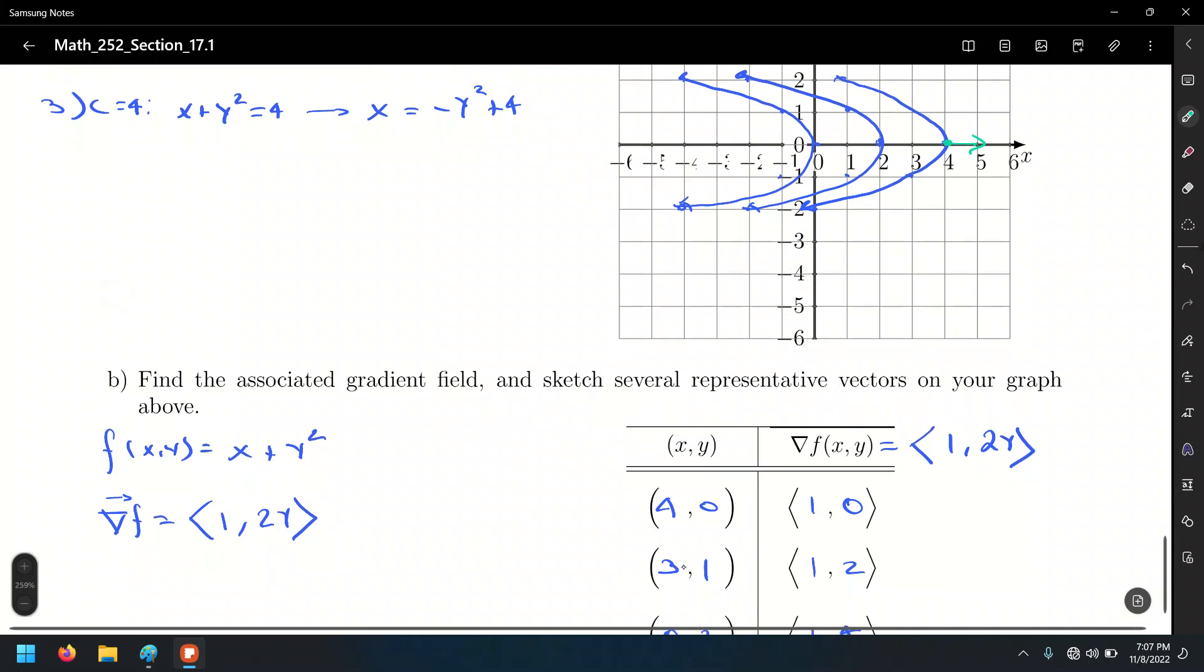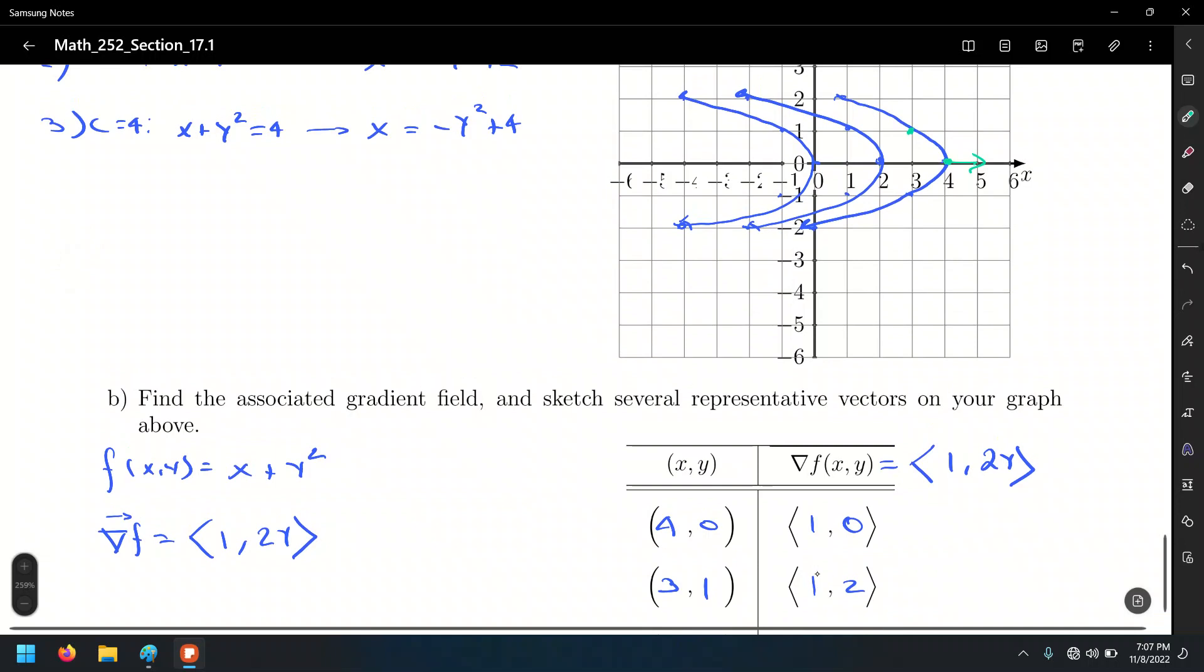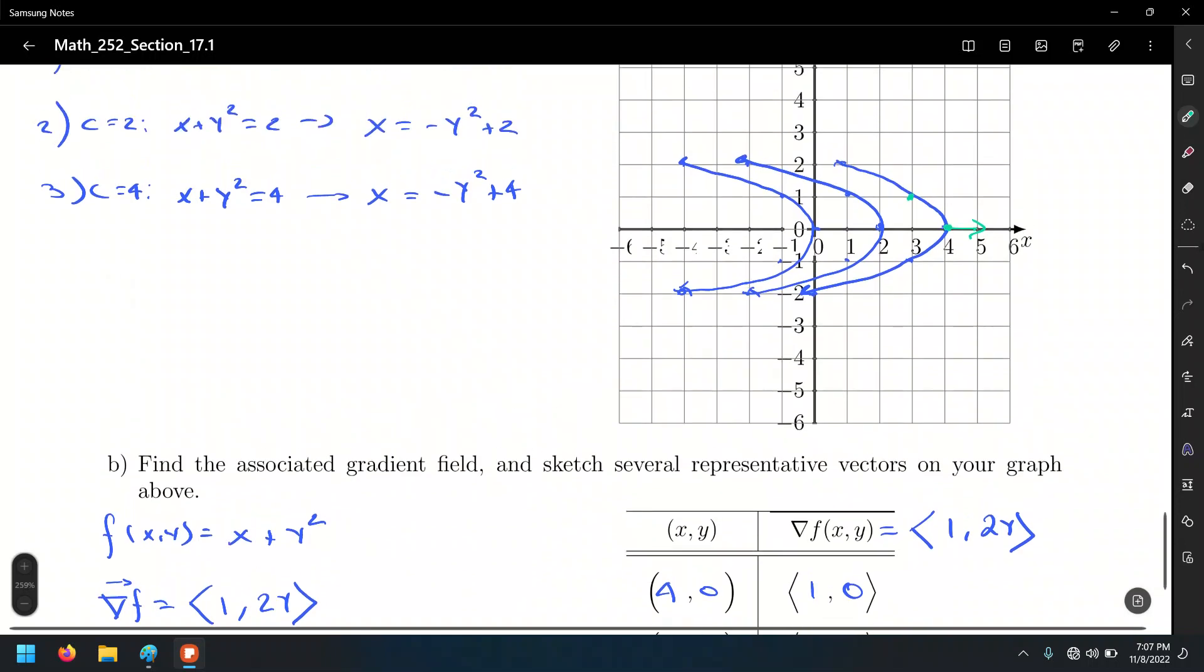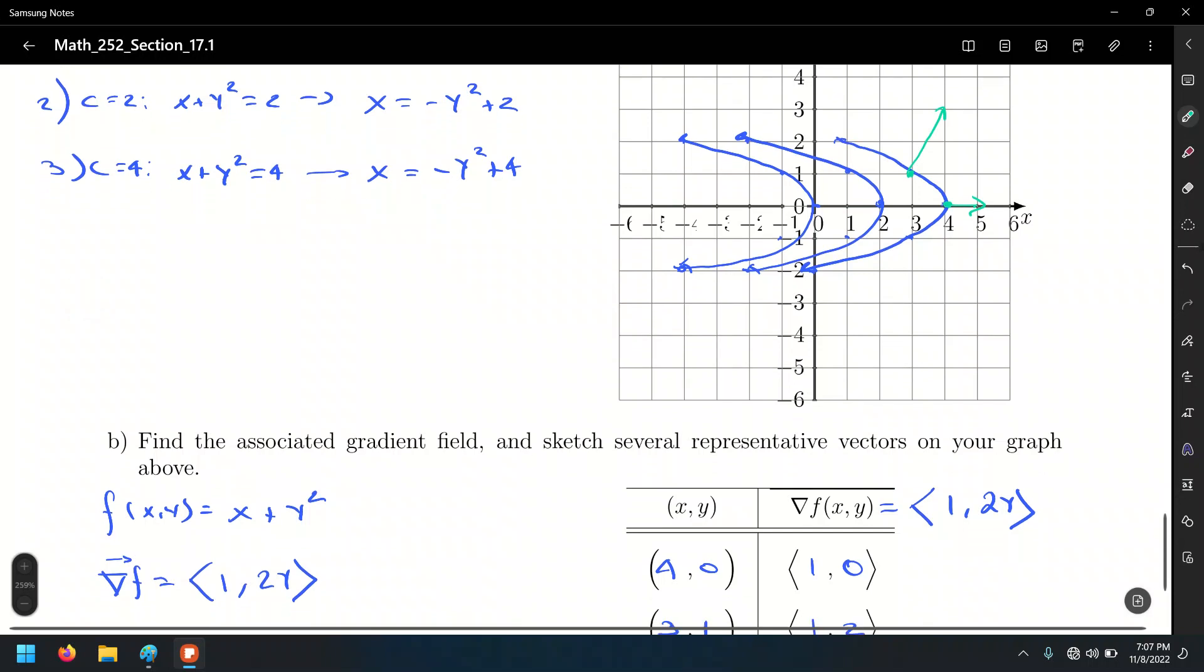And at the point (3, 1), let's go to the point (3, 1), which is a point in one of the parabolas. We're going to have a vector 1 unit in the x direction, 2 units in the y direction. That means (1, 2). And that's going to be this vector here.